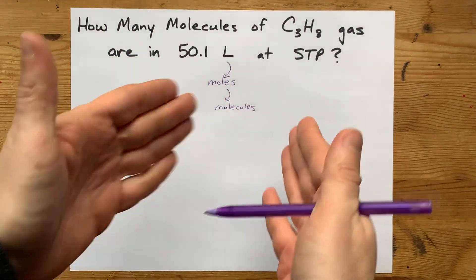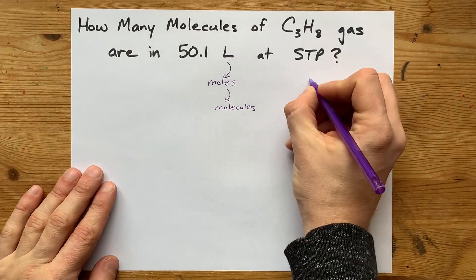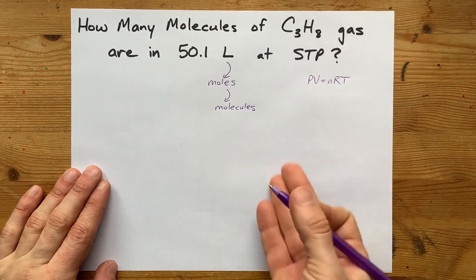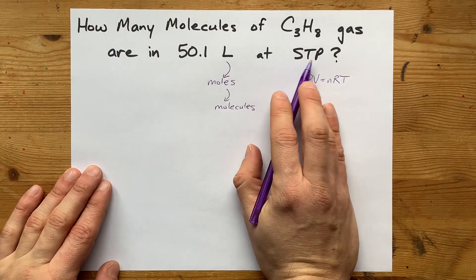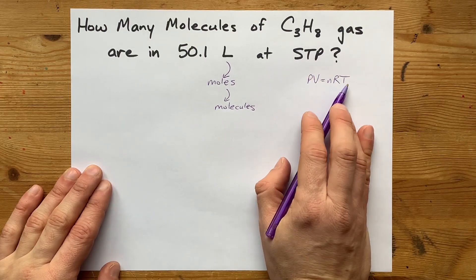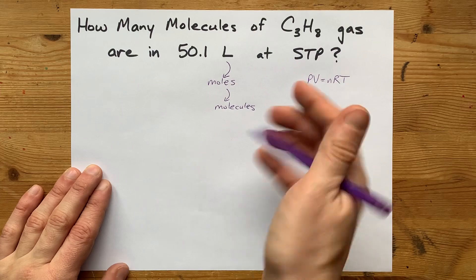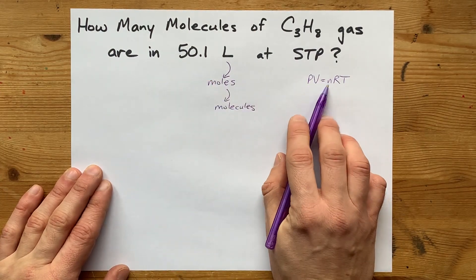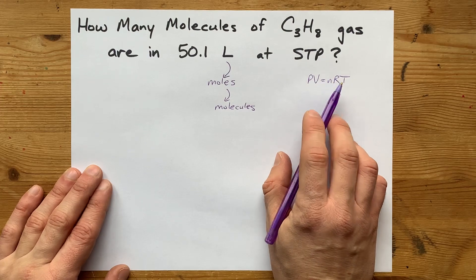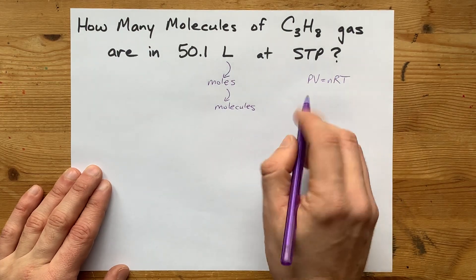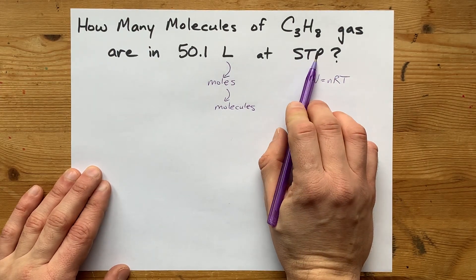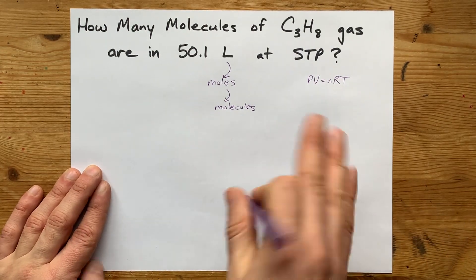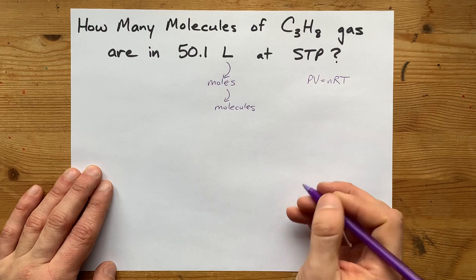Now, one option for you is to use PV equals nRT, the ideal gas law. Standard temperature and pressure has a P and a T given in it. Volume is what you're given here. R is a constant, and so you can calculate what n is. But, because it's STP, which is a very special set of conditions,